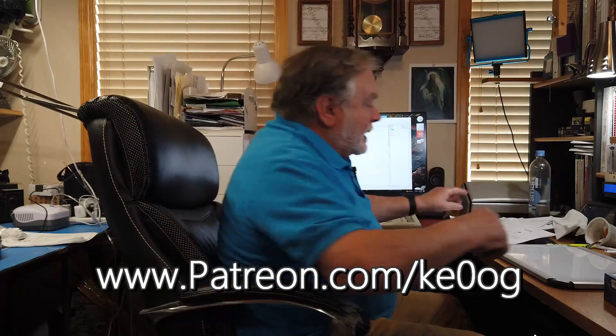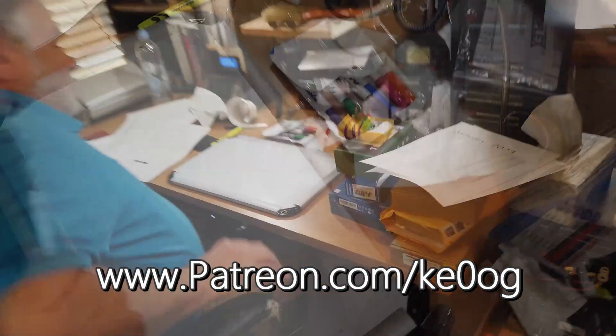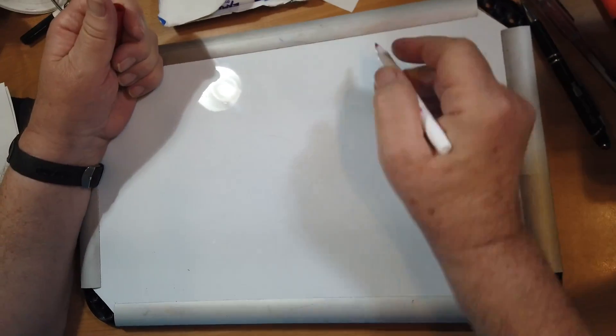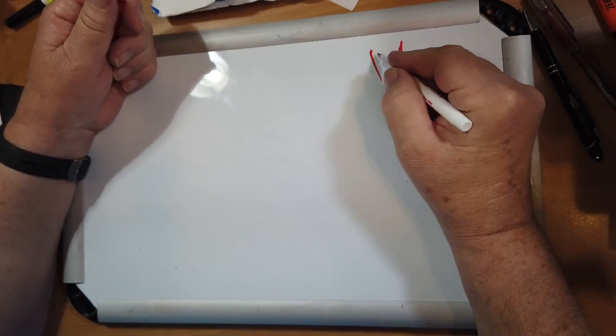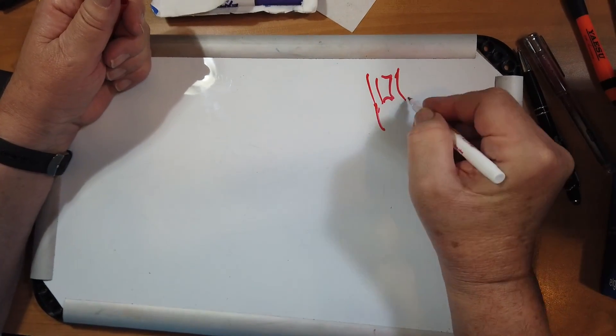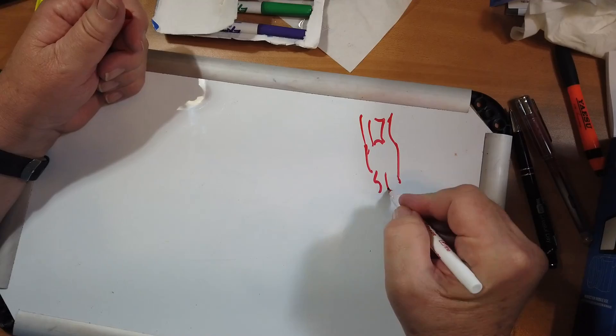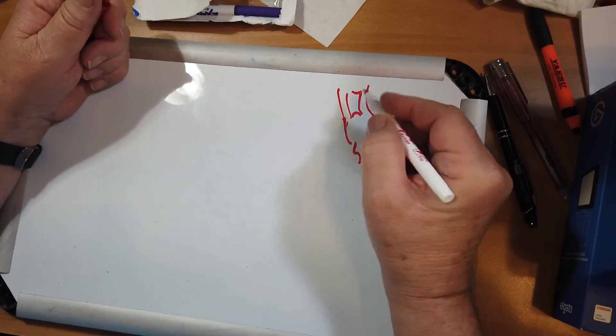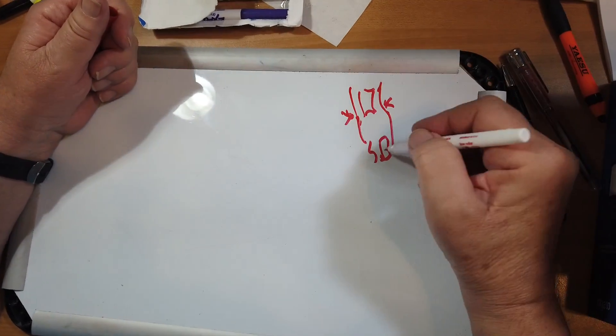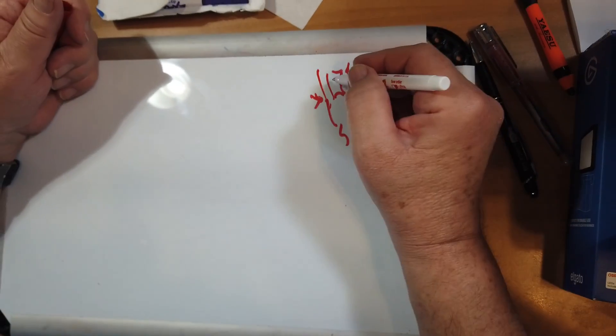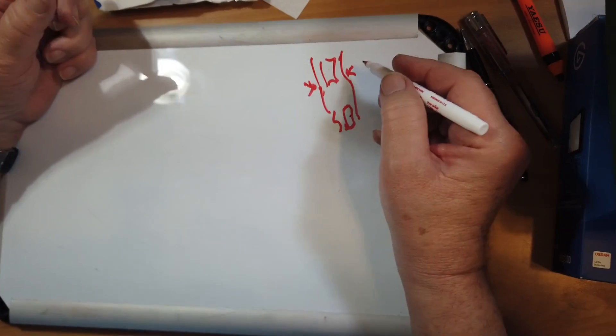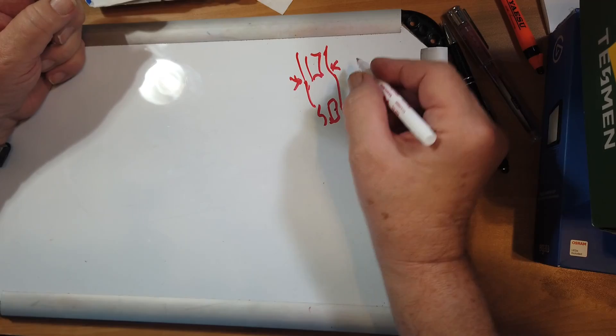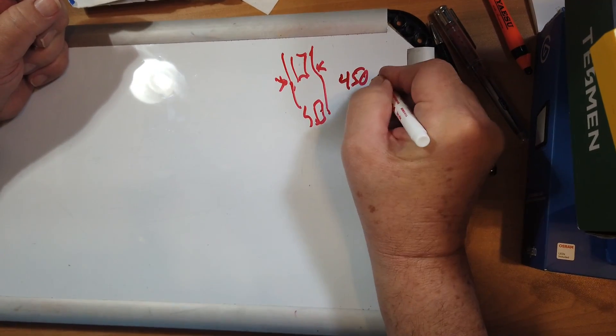Let's see what a folded dipole is. A folded dipole we use usually, these days, 450 ohm ladder line. It's two conductors that is all plastic and there's holes in it, so it looks sort of like a ladder. And this is 450 ohms.